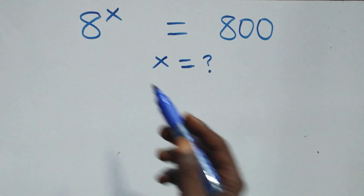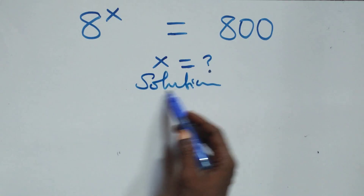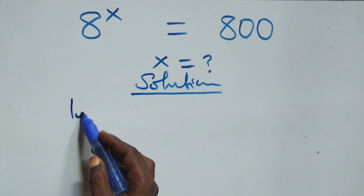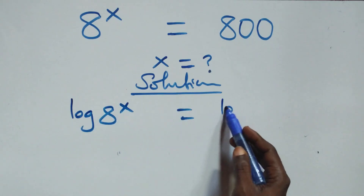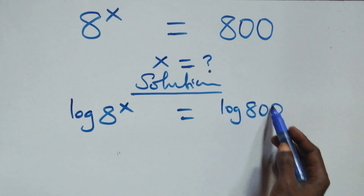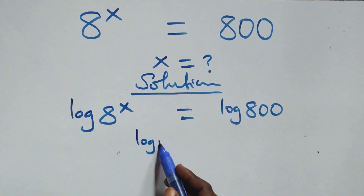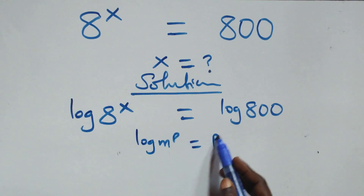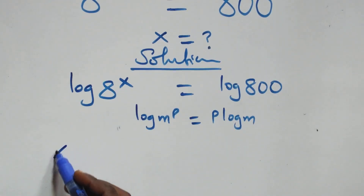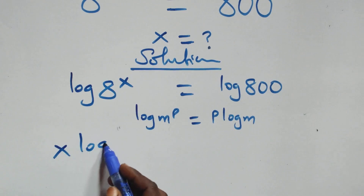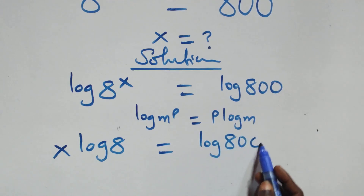Hello, you are welcome. How to solve this nice exponential equation. From here, we take the log on both sides — we have log of a raised to power x equals to log 800. The next step, we apply the power rule of logarithm: log m raised to power p is the same thing as p log m. So this becomes x log 8 equals to log 800.